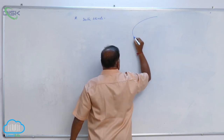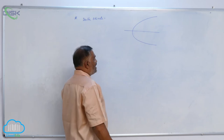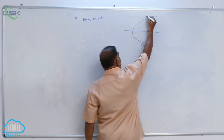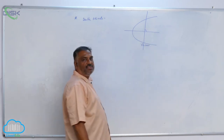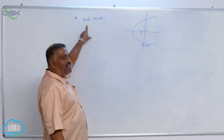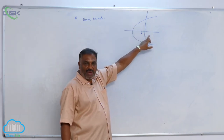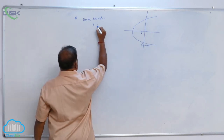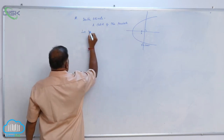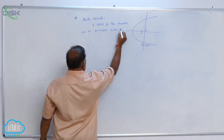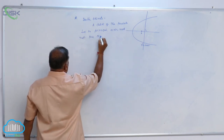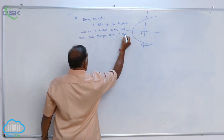A double ordinate of the parabola — for the standard parabola y² = 4ax, this is the principal axis. Any chord of the parabola perpendicular to the principal axis, which need not pass through the focus, is called a double ordinate.